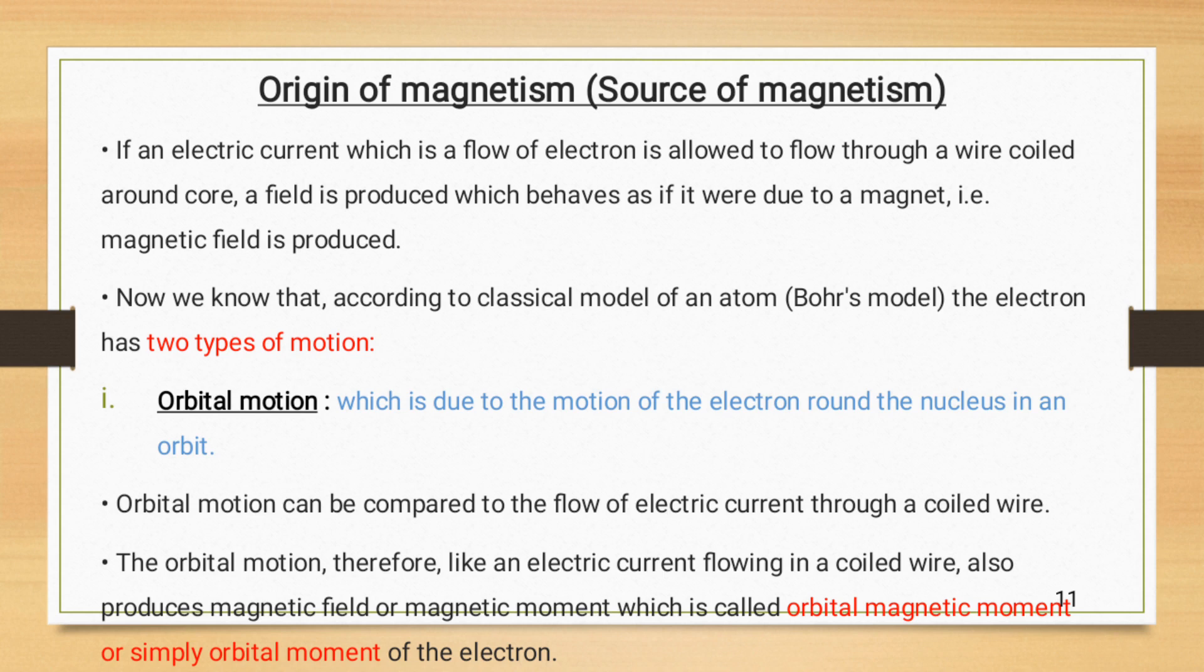Orbital motion can compare to the flow of electric current through a coiled wire. The orbital motion therefore like an electric current flowing in a coiled wire also produces magnetic field or magnetic moment which is called orbital magnetic moment or simply orbital moment of electron.